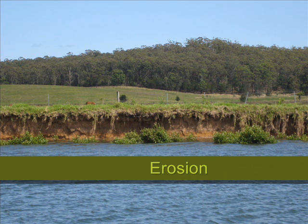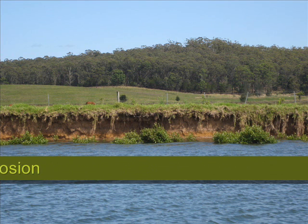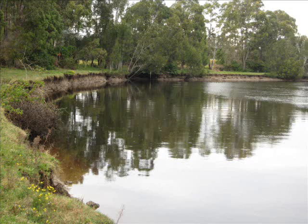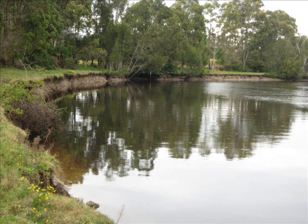Erosion of stream banks has been greatly increased with clearing of riparian vegetation. Erosion leads to reduced productivity, loss of habitat, reduced water quality and fluctuations in nutrient levels.